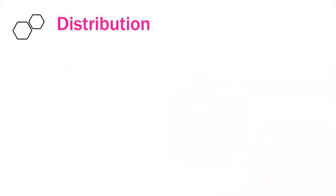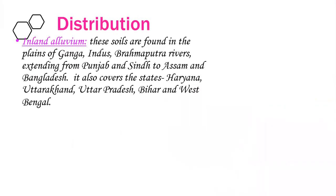Coming to the distribution of alluvial soils. The first category is inland alluvium. These soils are found in the plains of the Ganga, Indus and Brahmaputra rivers, extending from Punjab and Sindh to Assam and Bangladesh. It also covers the states of Haryana, Uttarakhand, Uttar Pradesh, Bihar and West Bengal.